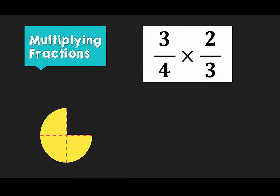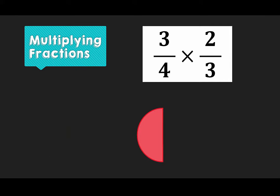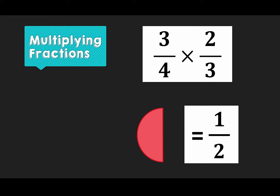The numerator tells us that we have 2 of these particular pieces. So this then brings us to our answer. We can see that we have half of our original circle. So 3 quarters multiplied by 2 thirds gives us 1 half.